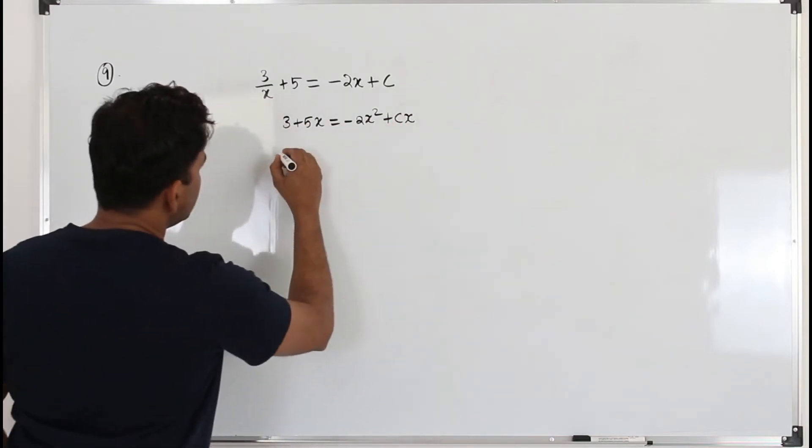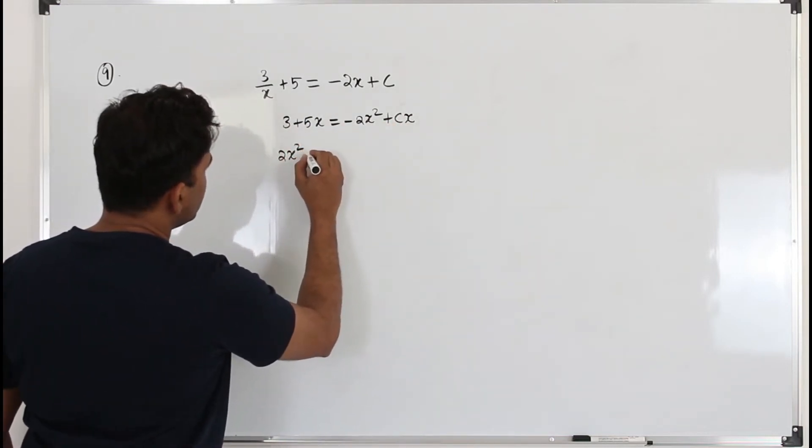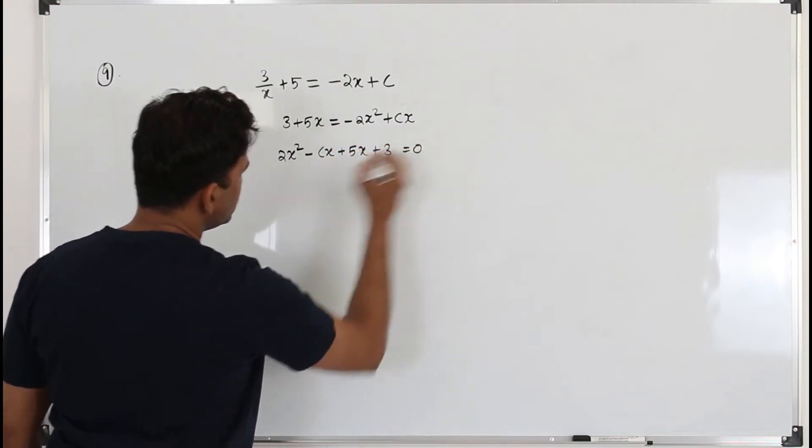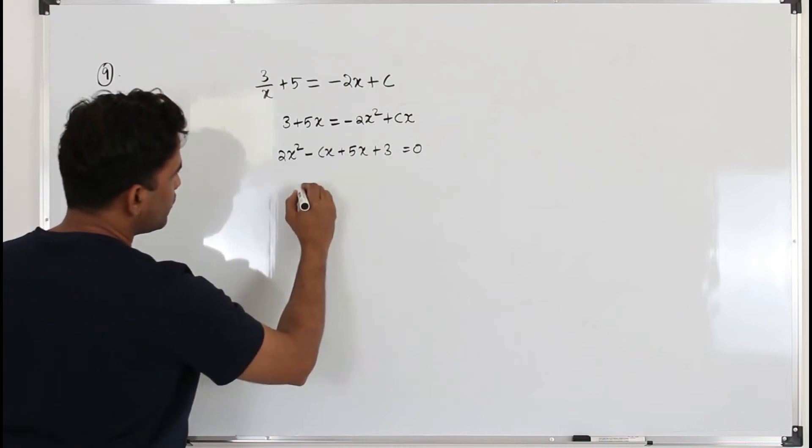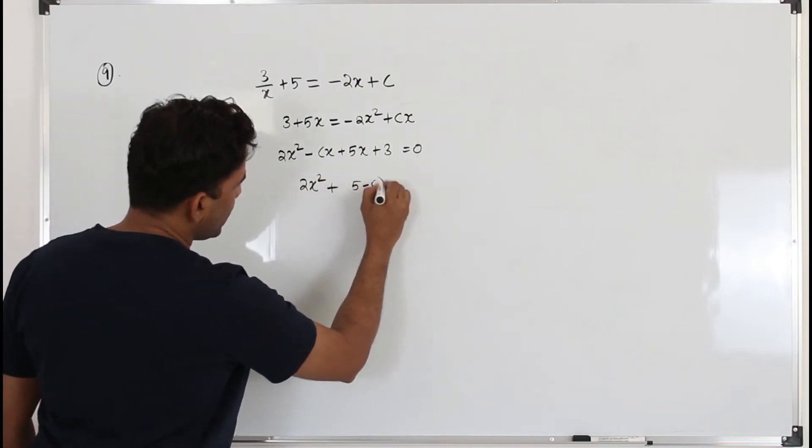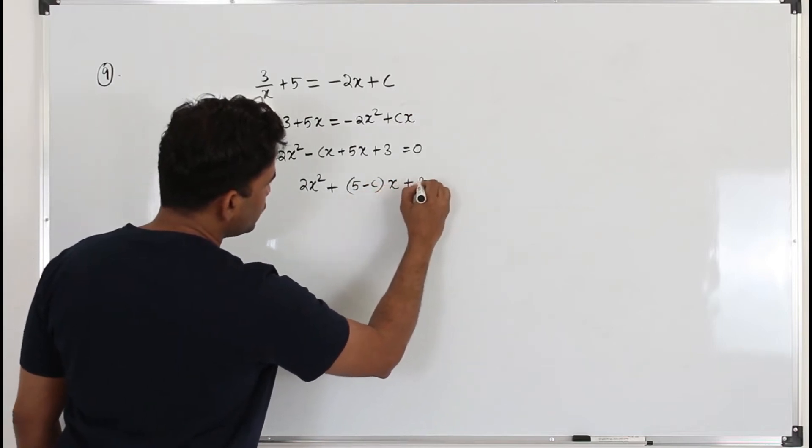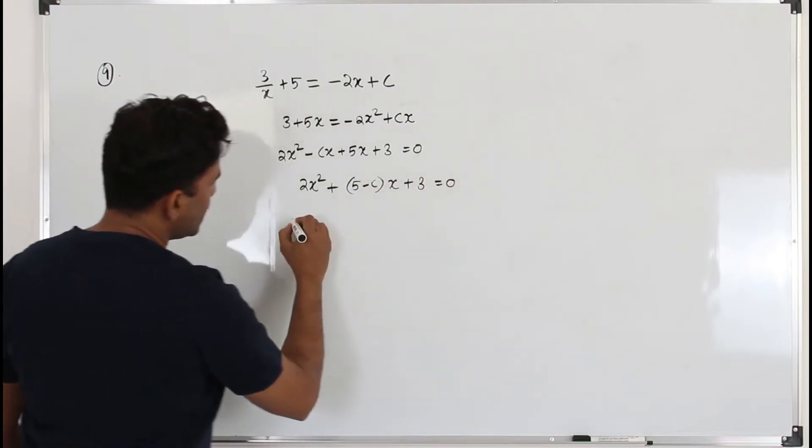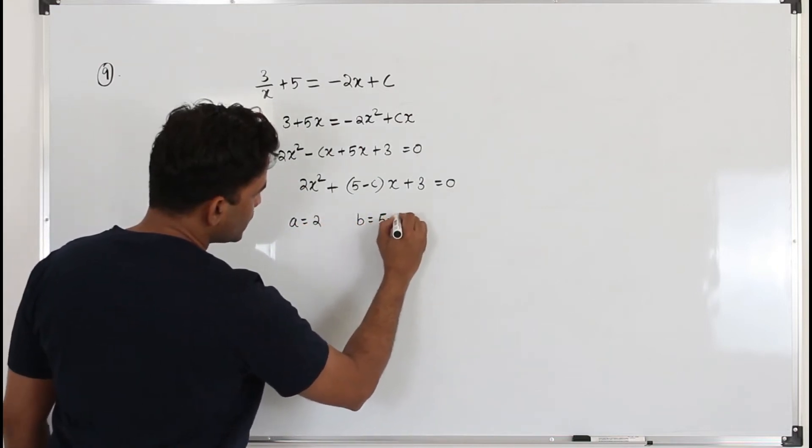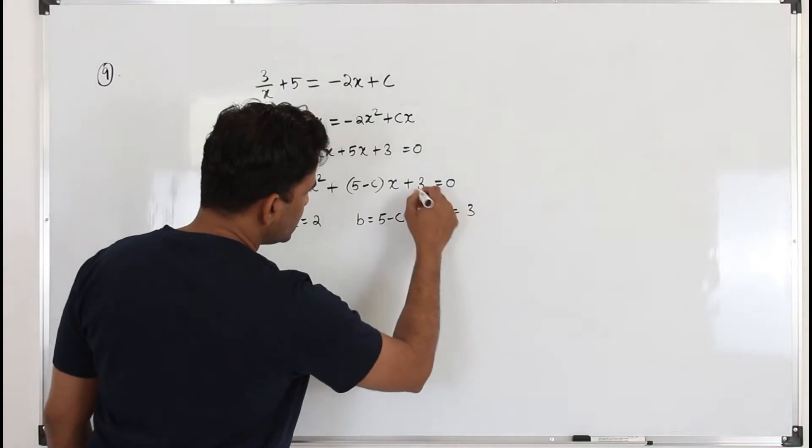Write everything on one side: 2x² - cx + 5x + 3 = 0. And you can take x as a common factor here. You get 2x² + (5 - c)x + 3 = 0. Here a is the coefficient of x². b is the coefficient of x which is 5 - c. c is the constant term.